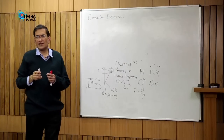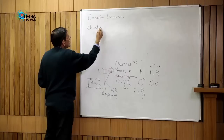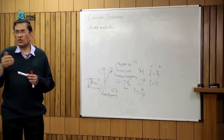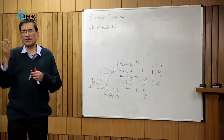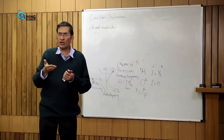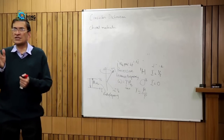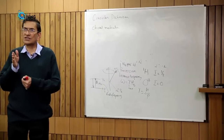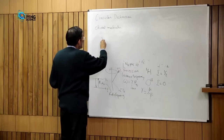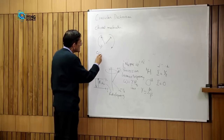Circular dichroism is a method you can apply first to chiral molecules. The important requirement is that your molecule should be chiral, meaning optically active — if you pass plane polarized light through it, the molecule should rotate the plane of polarized light. Plane polarized light actually consists of two circularly polarized components: one component rotating in one direction, the other rotating in the opposite direction.